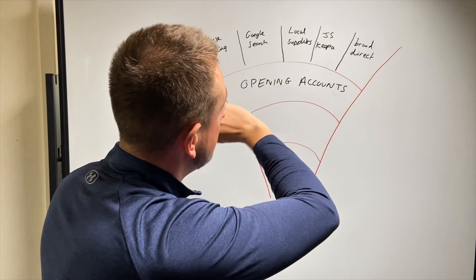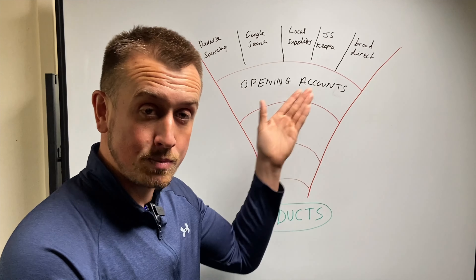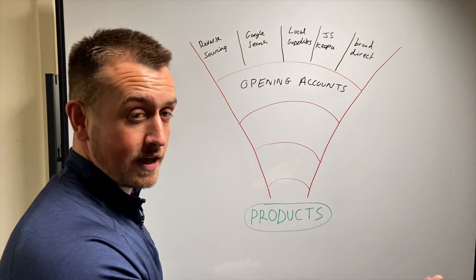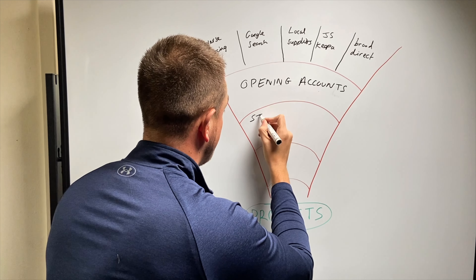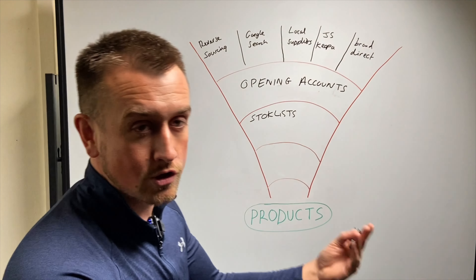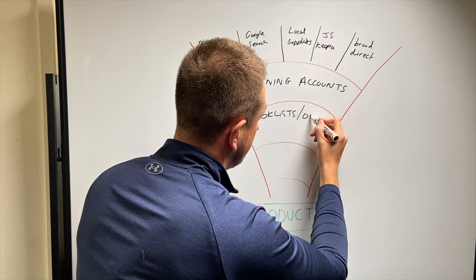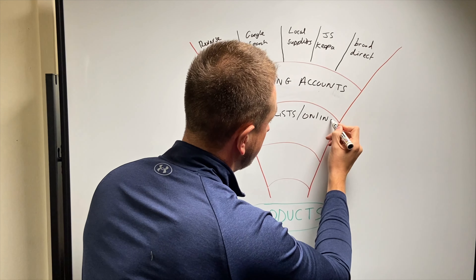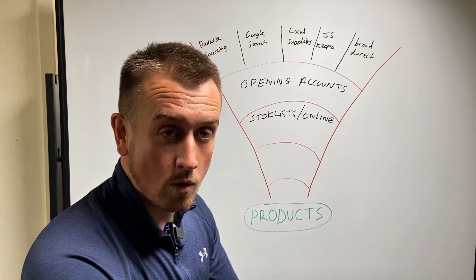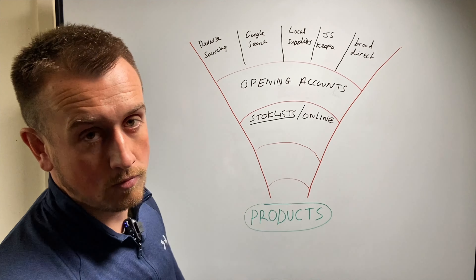So step one, we're going to use as many methods as we can to find suppliers. Step two is we're going to open as many accounts as we can with these suppliers. And then we get down to step three in the funnel, which is the stock lists. Generally a wholesaler or supplier will give you an Excel spreadsheet with their stock list on it. Not all of them do this — some of them is online only, so you will have to log on to their website and manually go over every single product.